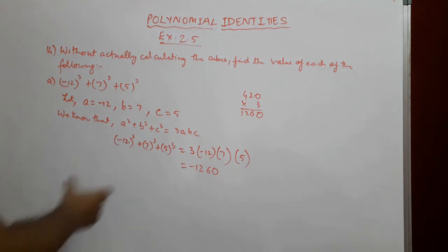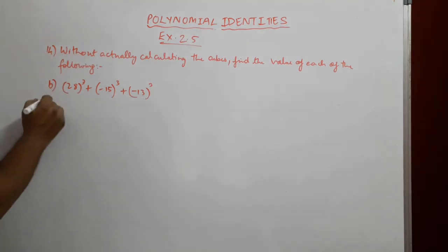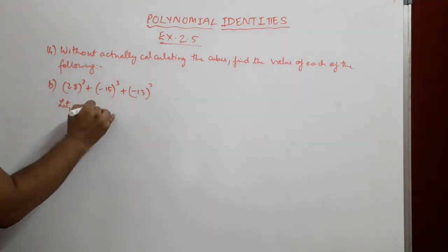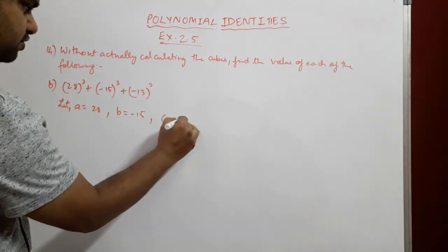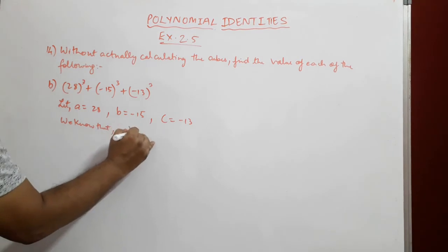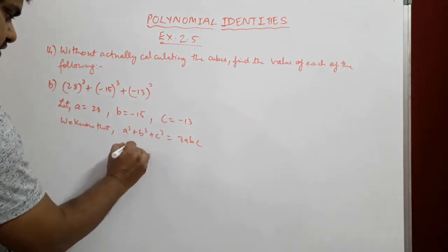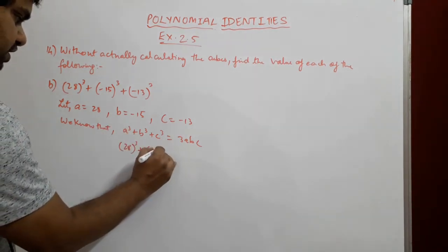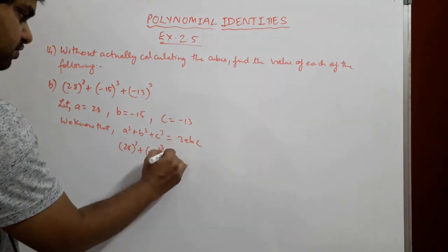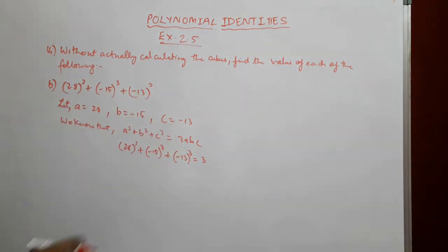The next problem is 28³ + (-15)³ + (-13)³. We let a = 28, b = -15, c = -13. We check: 28 + (-15) + (-13) = 0. So we can apply a³ + b³ + c³ = 3abc, giving us 3 × 28 × (-15) × (-13).